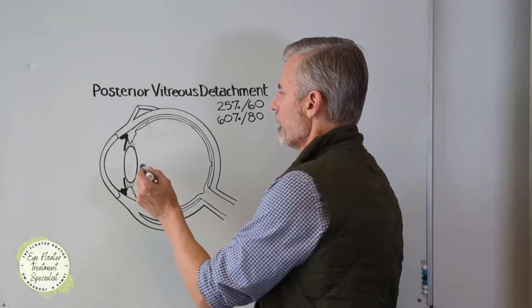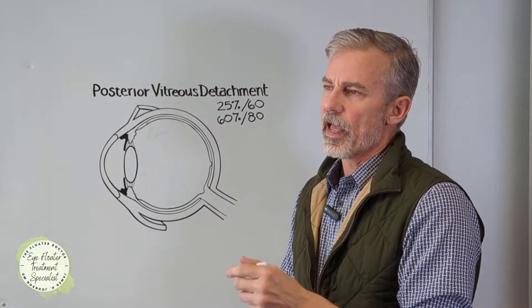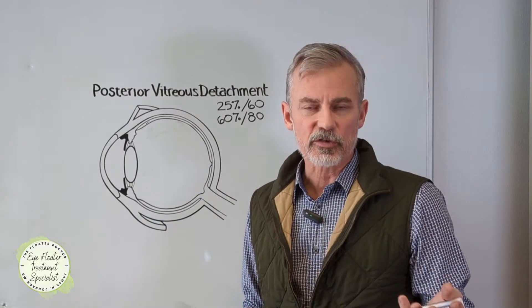We have PVDs. What is it? Well, this space here in the eye is a three-dimensional globe, of course, and it's filled with a gel. This is the vitreous.